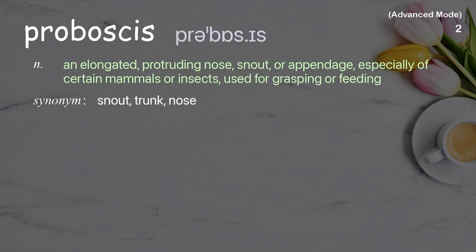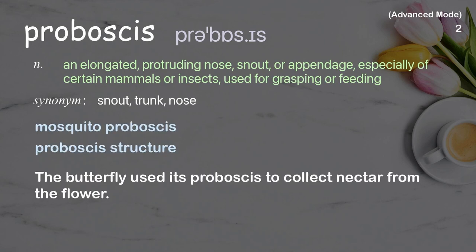Proboscis: an elongated protruding nose, snout, or appendage, especially of certain mammals or insects, used for grasping or feeding. Examples include the mosquito proboscis. The butterfly used its proboscis to collect nectar from the flower.